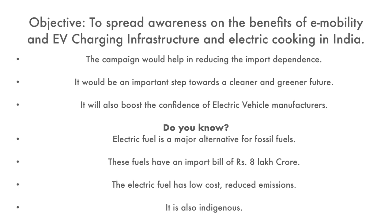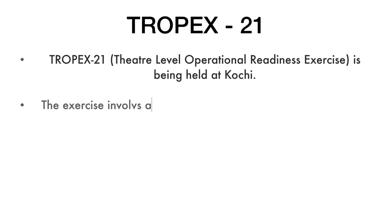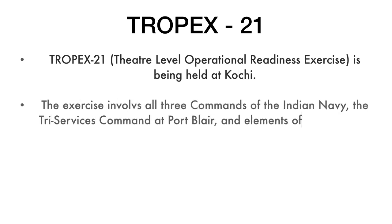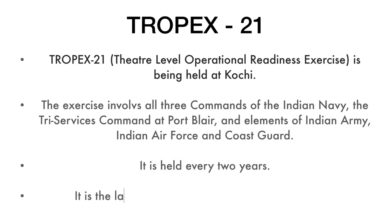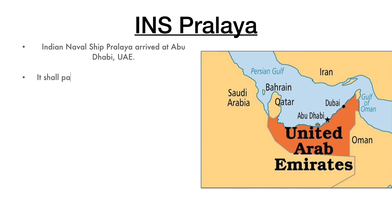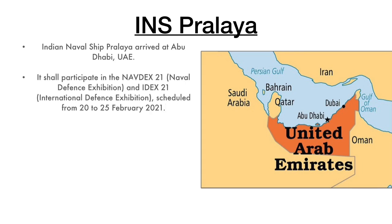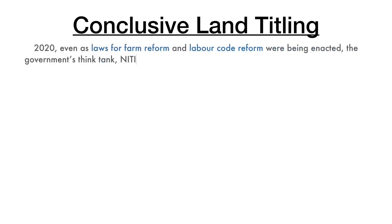The next headline: TROPEX 21 — the Theater Level Operational Readiness Exercise held at Kochi. The exercise involves three commands of the Indian Navy, the tri-service command at Port Blair, elements of the Indian Army, Indian Air Force, and Coast Guard. It is held every two years and is the largest exercise conducted by the Indian Navy. Also in news: Indian Naval Ship Pralay arrived at Abu Dhabi and will participate in NAVDEX 21 — the Naval Defence Exhibition — and IDEX 21, the International Defence Exhibition, scheduled from 20 to 25 February 2021.